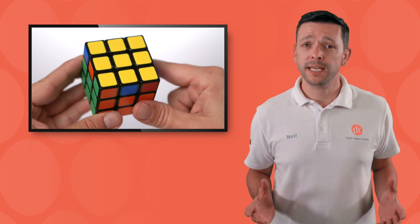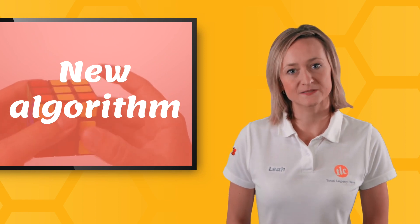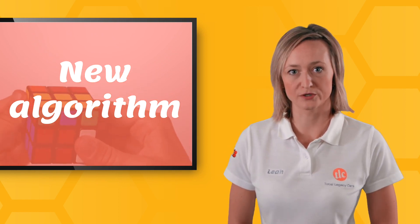This lesson we're going to learn to complete the yellow corners. You may already have one or two yellow corners in place. That's okay. We are going to use a new algorithm. There is only one to learn this time and it's pretty simple. Just two sides to move. Let's get going.